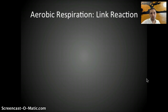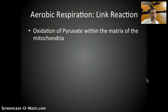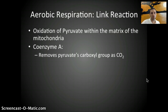Let's take a look at the link reaction in more specific detail. This process is the oxidation of pyruvate, and it occurs within the matrix of the mitochondria. The pyruvate was produced in the cytoplasm of the cell, and now it's actually being moved into the mitochondria. An enzyme — specifically coenzyme A — is used in this process. It first removes the pyruvate's carboxyl group as CO2, which is one of the steps in which CO2 is released.